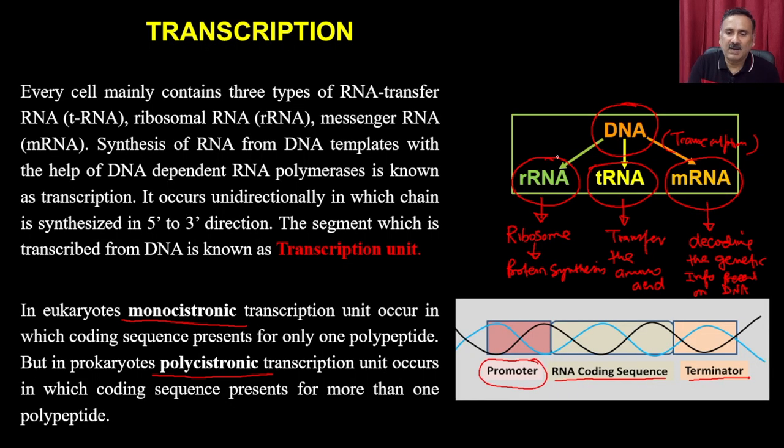Transcription in eukaryotes is more complex, with a significant difference from prokaryotes. In prokaryotes, a single type of RNA polymerase is used for RNA synthesis. In eukaryotes, different RNA polymerases are used. Additionally, transcription in prokaryotes occurs in the cytoplasm, whereas in eukaryotes it occurs inside the nucleus, and the transcripts are then transported out for translation.